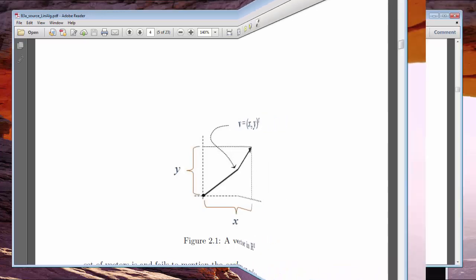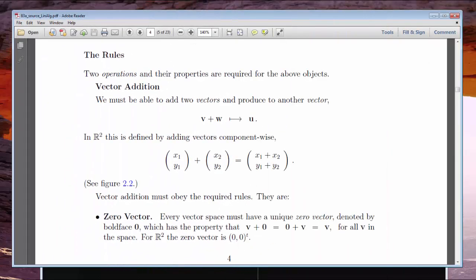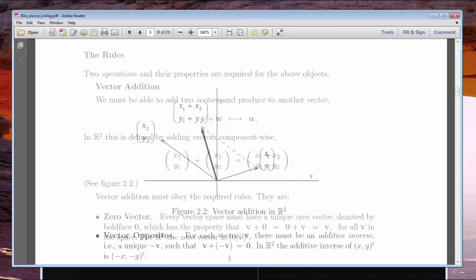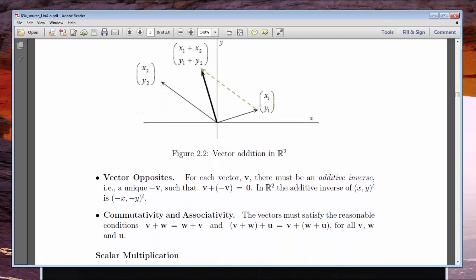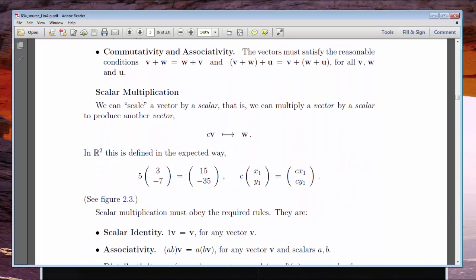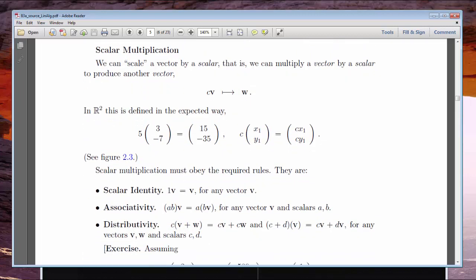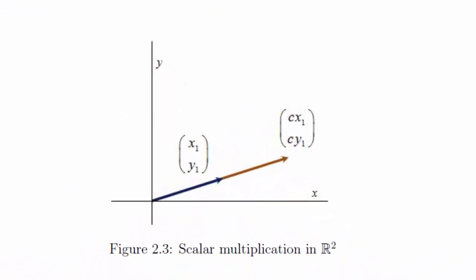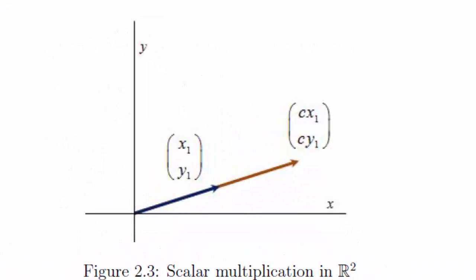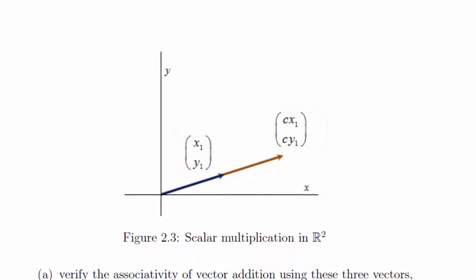When we get to the rules of the game, we always begin with vector addition. We'll look at that both algebraically and geometrically. Another rule is one that requires that we describe how one multiplies a vector by a scalar. This action is called scalar multiplication. A picture really helps here because it explains the term scalar. The effect is to scale up or scale down the vector that's being multiplied by the scalar.